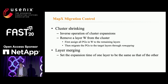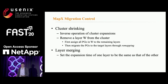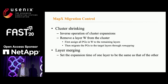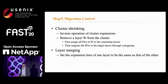MapX also supports cluster shrinking and layer merging. When the load of a layer falls below a threshold, MapX shrinks the cluster by removing the layer — the inverse of cluster expansion. Given a layer W to be removed, we first assign all PGs in W to remaining layers according to their aggregated weights, then migrate these PGs to the target layers through remapping. After shrinking, W is logically preserved and its initial PG number will not change, to avoid affecting the mapping from objects to PGs. MapX balances the load of two layers by layer merging, realized by setting the expansion time of one layer equal to that of the other.